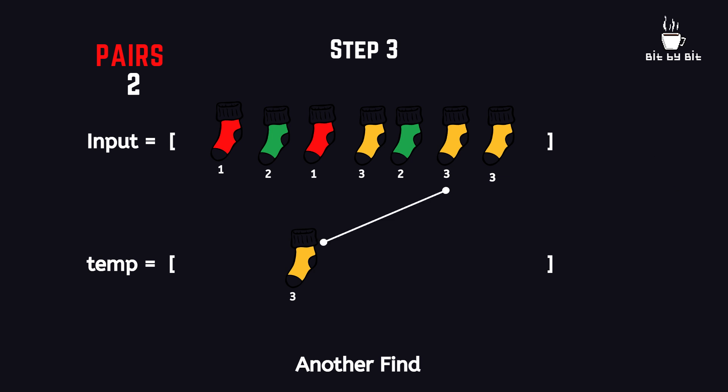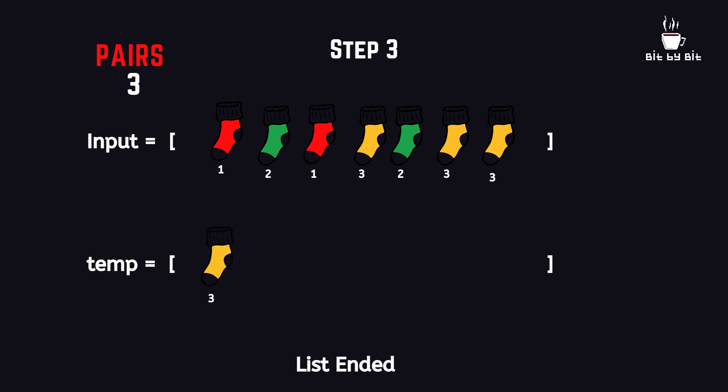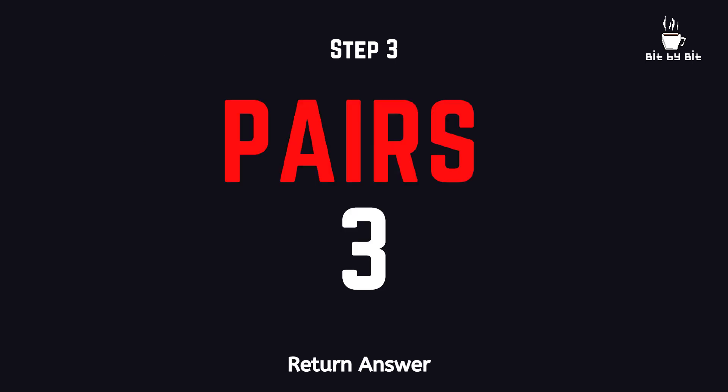Another pair for the yellow sock. Same thing — remove from the temporary list and increment the counter. Now we are only left with one sock. We ignore the sock as there are no more socks left to loop over, and now we return the final counter value, which is 3 pairs.